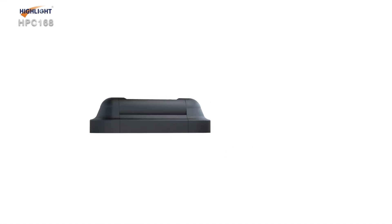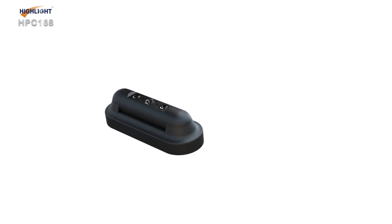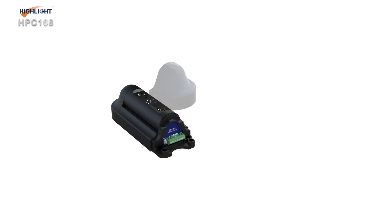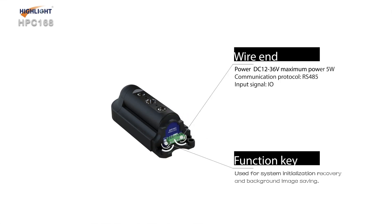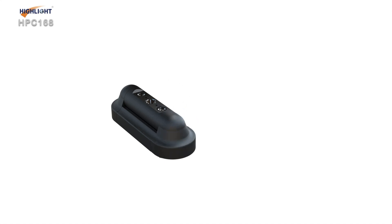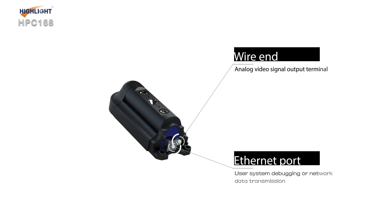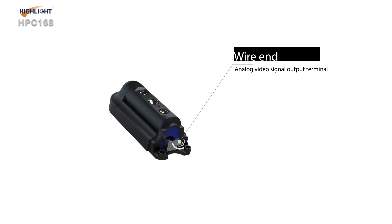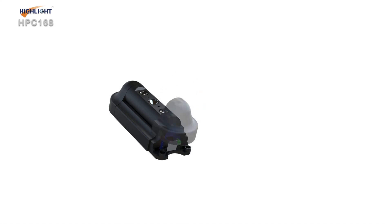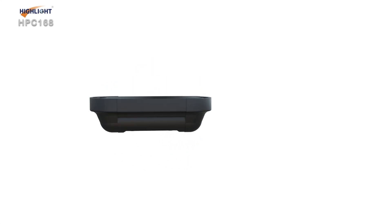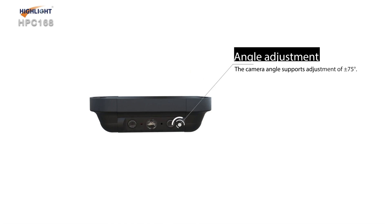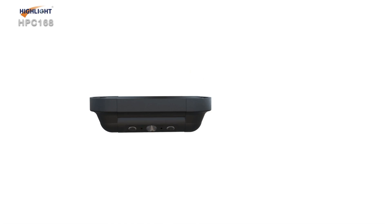3D image sensor technology and stereo vision technology can more accurately identify and count human targets moving in different directions, whether entering or exiting. Through 3D image sensors and computer vision technology, counters can obtain depth information of human targets, thereby achieving more accurate statistics.